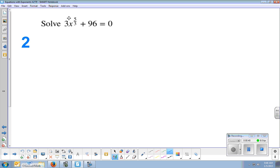like if I see here on number 2, see how this is 3x to the 5 thirds plus 96. I first want to get rid of the plus 96 and get rid of the 3 and isolate this before I deal with the exponent.